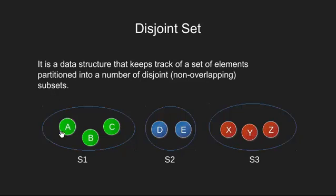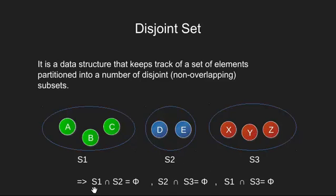Here you can see the three sets we have. These are disjoint sets as they have no elements in common, or we can say that their intersection with each other is an empty set.